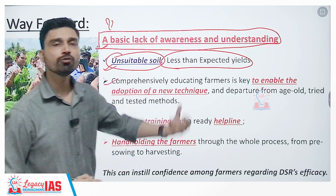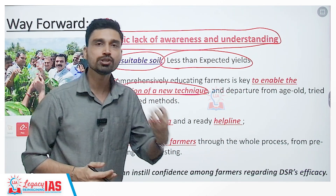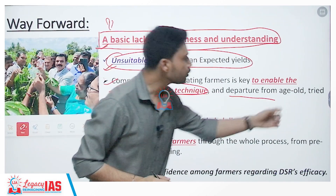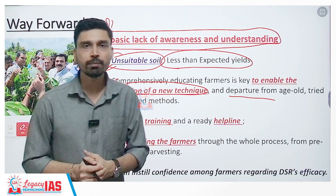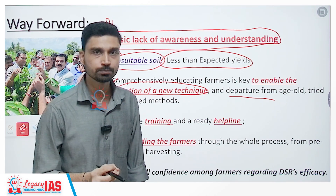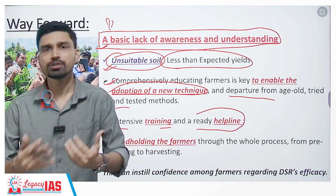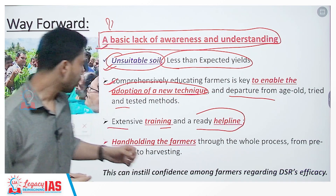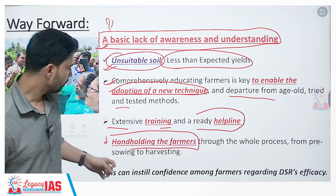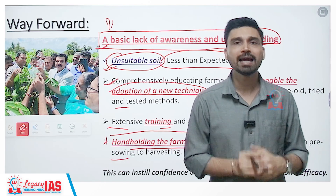Second, comprehensive education of farmers is key, as this is a new technique and farmers are generally resistant to adopting new techniques out of fear of massive losses if yield declines. Any departure from the age-old tried and tested method of farming requires a nudge, and that nudge can only be given through proper education and training. Third, extensive training programs and ready helplines should be set up at the state level, with farmers given hand-holding support from pre-sowing all the way to harvesting, so any doubts, problems, or issues can be resolved immediately.